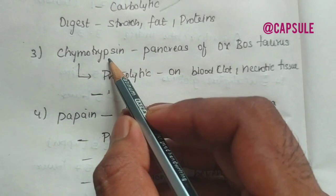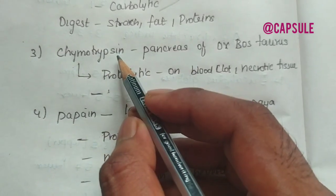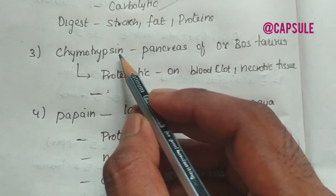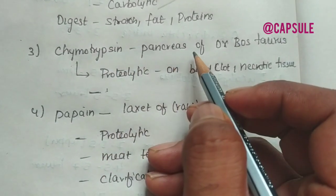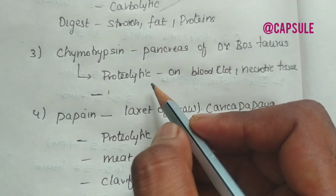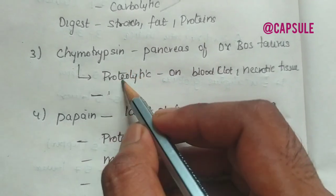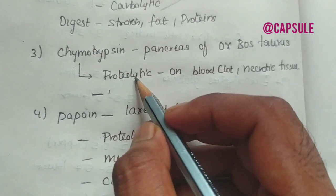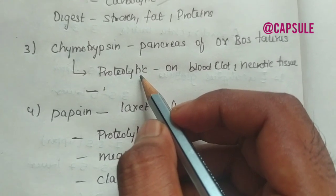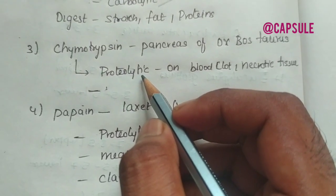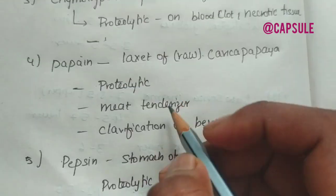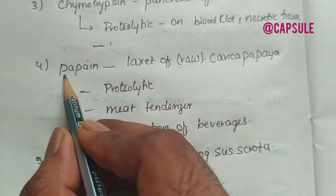Coming to trypsin or chymotrypsin. It is obtained from the pancreas of ox, Bos taurus, family Bovidae. Chymotrypsin is a proteolytic enzyme. It dissolves blood clots and proteolysis of necrotic tissues.